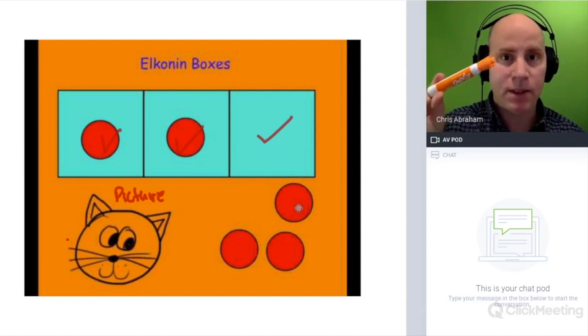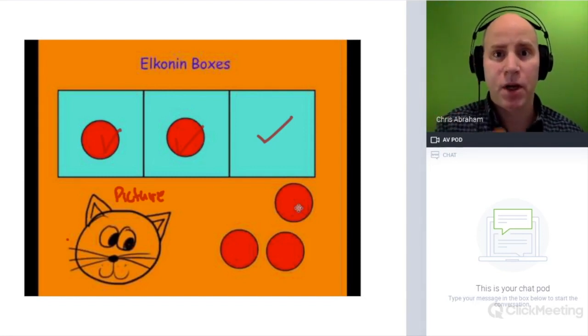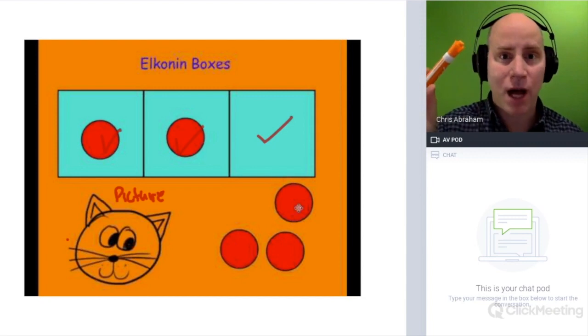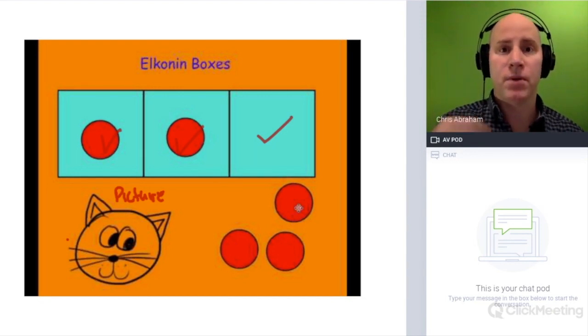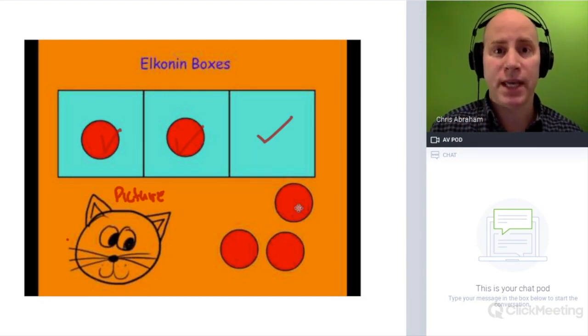And then from that visual prompt, as long as it's a visual prompt, whether it's a picture or actual object, from there they could start to pronounce the individual phonemes they hear in the word.